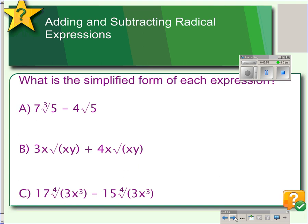In example A, we have a cube root of 5 and a square root of 5. Again, they don't simplify. Example B, we have square root of xy, square root of xy. This is good. So, now we can combine. And notice outside the radical, we have 3x and 4x. That's what we're combining. So, 3x plus 4x would be 7x. Inside the radical remains unchanged. Example C, we have the fourth root of 3x cubed in both cases. So, we can subtract our coefficients. 17 minus 15 would be 2. The radical remains unchanged.